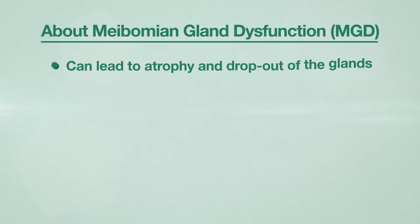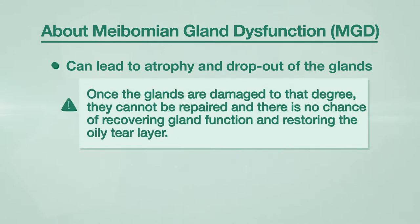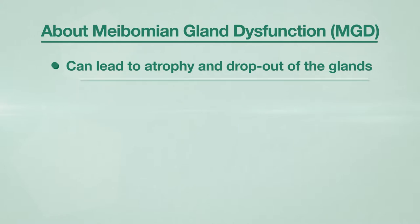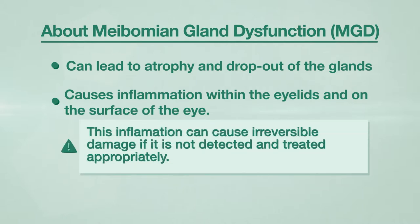MGD can lead to atrophy and dropout of the glands. Once the glands are damaged to that degree, they cannot be repaired and there is no chance of recovering gland function and restoring the oily tear layer. Chronic dry eye and MGD cause inflammation within the eyelids and on the surface of the eye.